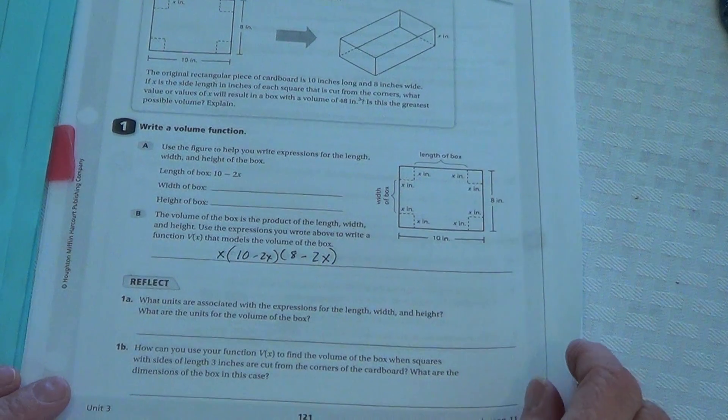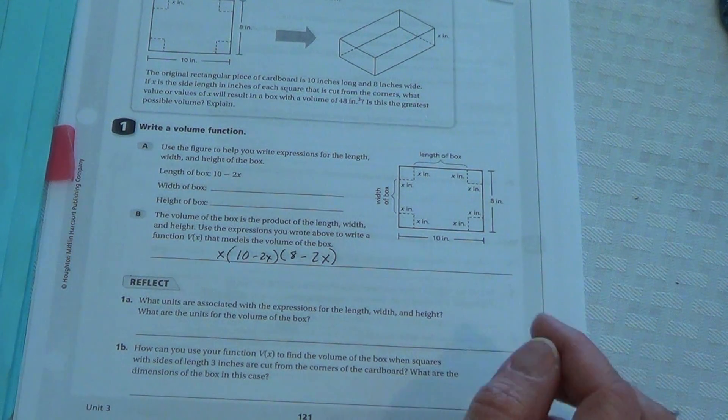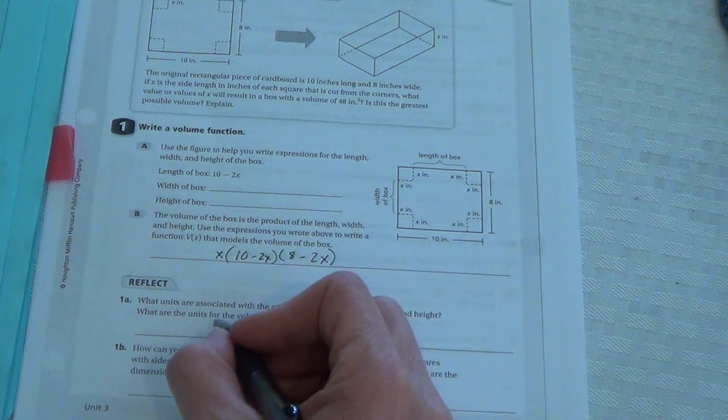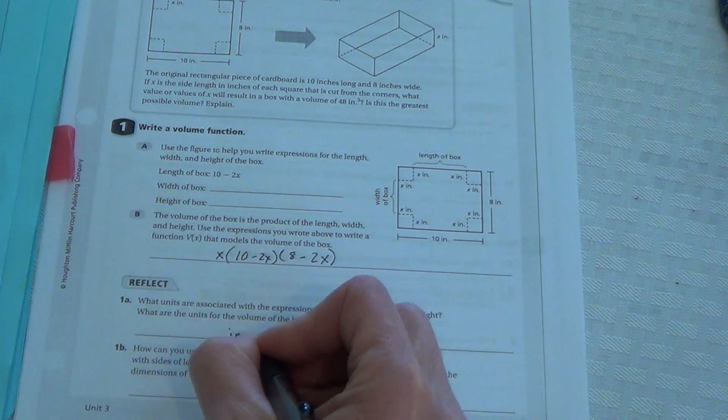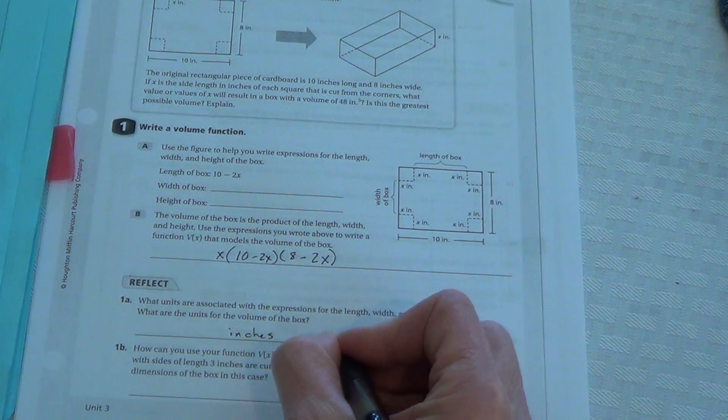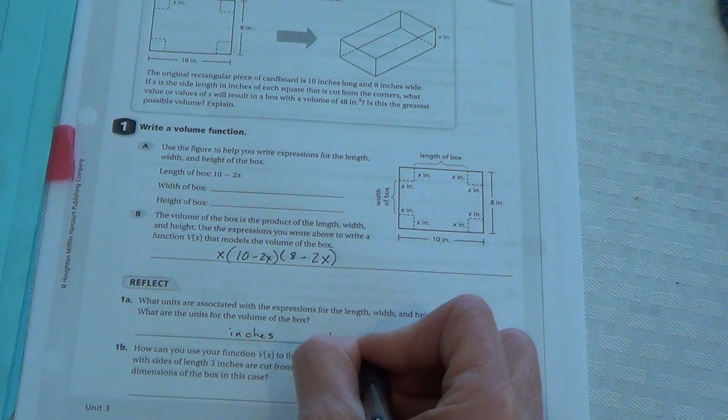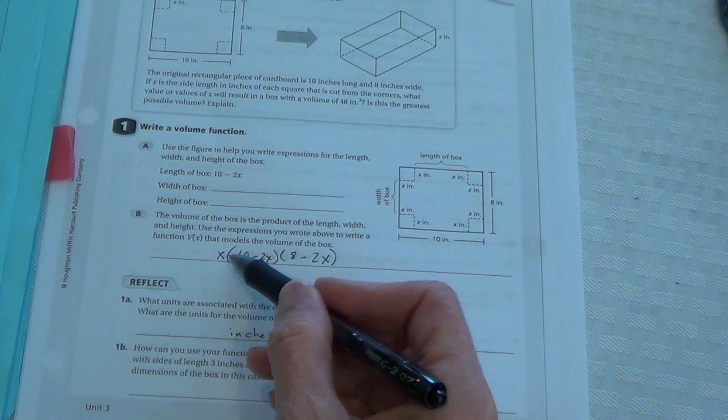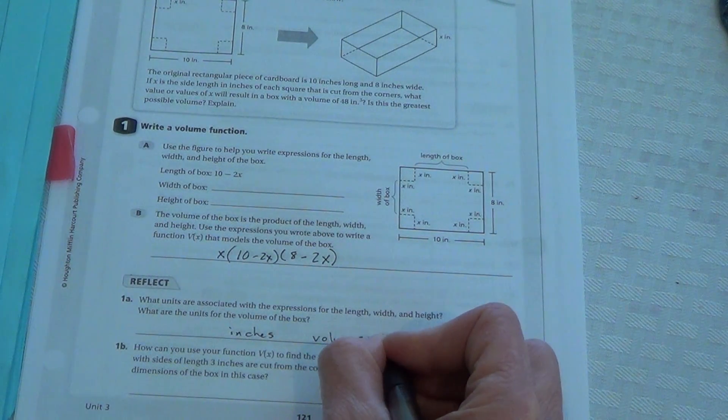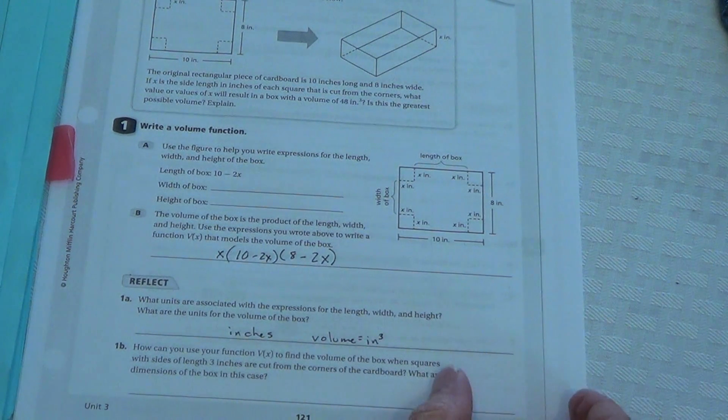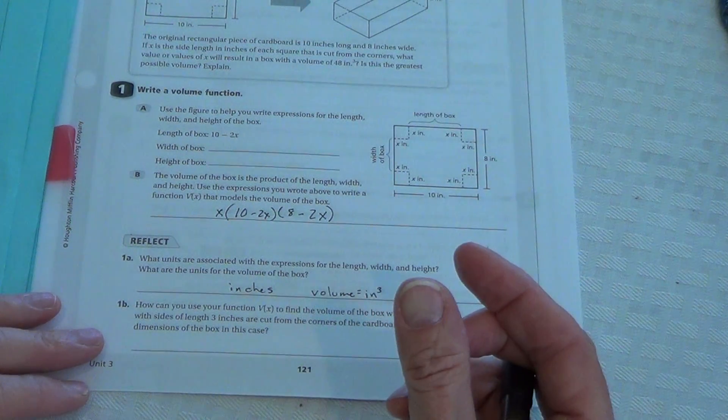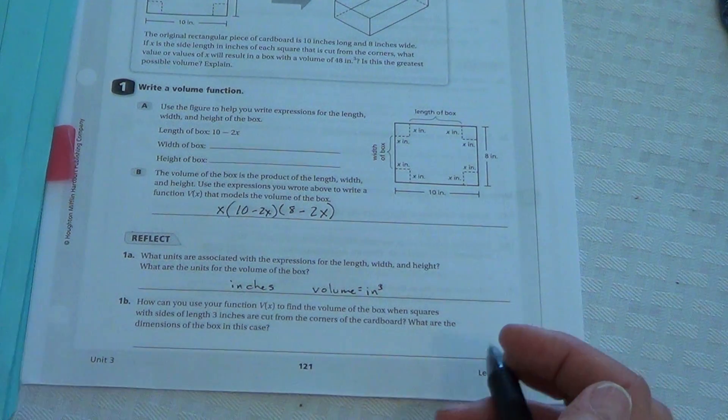Okay, so reflect what units are associated with the expressions of length, width, and height. We need to look back over here. The units are inches. So the units for the volume in the box would be inches times inches times inches would be inches cubed. We actually will look in class at how an inch cube is actually a little cube, an inch on every side, on every dimension.